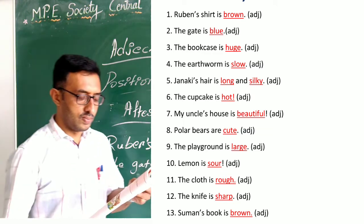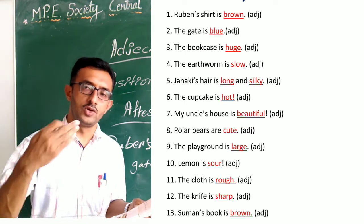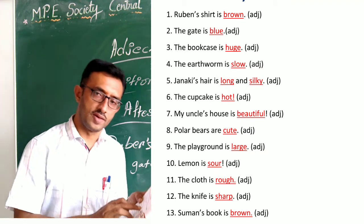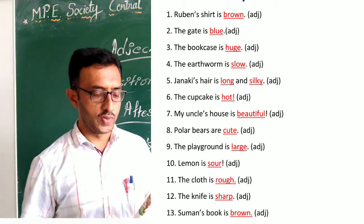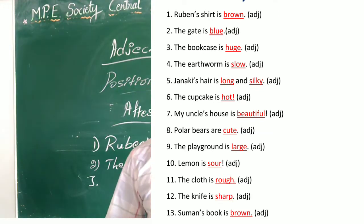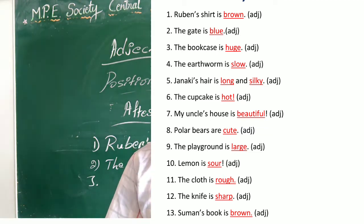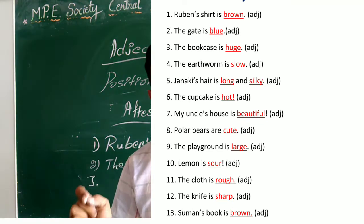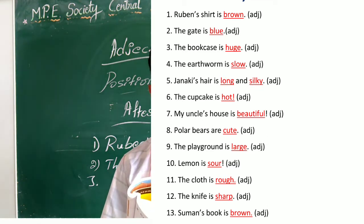Fourth sentence: 'The tortoise is slow.' Slow is an adjective, and we are using it after the verb 'is.' Fifth sentence: 'Janaki's hair is long and silky.' Both long and silky are adjectives, but we are using them after the verb 'is.' Sixth sentence: 'The cupcake is hot.' We are using 'is' as the verb, and hot is an adjective used after the verb.